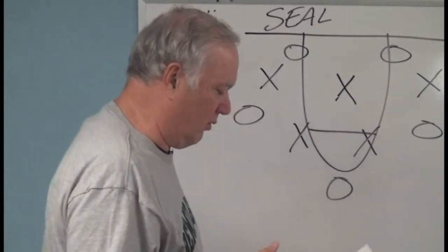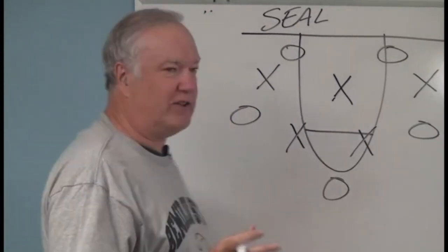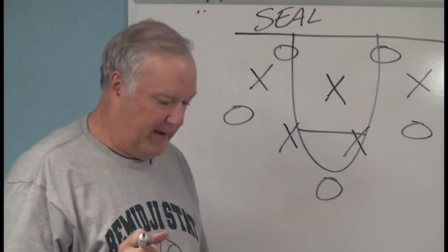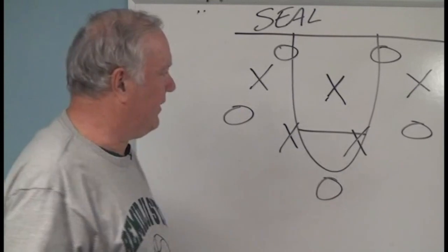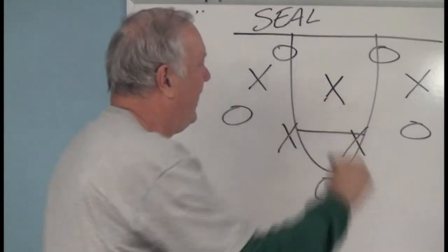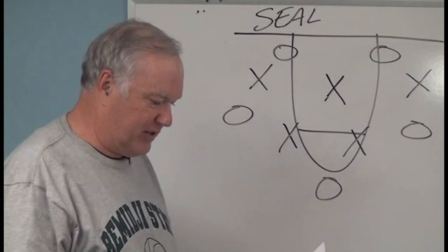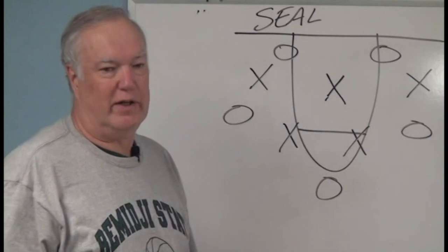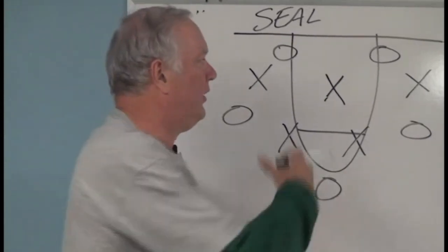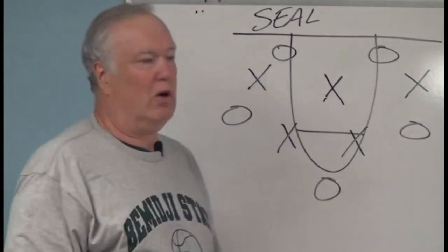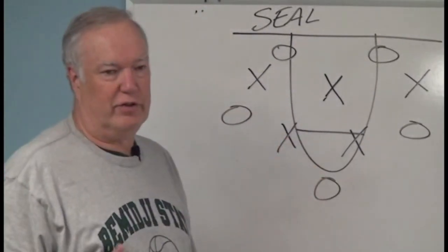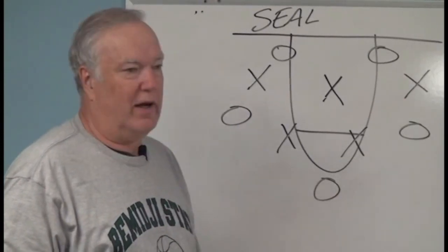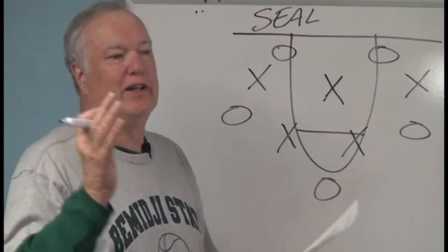We want to create situations where you get double teamed and it doesn't work for the defense. We want to maximize spacing on an equidistant basis, and we really want to attack the defensive player in the middle. We also want to force them out of whatever they're doing — if they'd rather play a two-three zone, you'll get a couple of layups right away or some wide open threes.